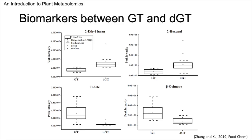Here are the biomarkers we found that can distinguish between GT (green tea) and DGT (decaffeinated green tea). 2-ethylfuran and 2-hexanol levels are higher in DGT than in GT, whereas indole and osamine levels are higher in GT than in DGT. Interestingly, osamine contributes to the basal flavor while indole is a key flavor component in tea. It is notable that regardless of the decaffeination method used, these components are commonly decreased, and ethylfuran and hexanol are commonly increased by the decaffeination process. These compounds may be related to oxidation occurring during decaffeination, as after solvent extraction the tea materials need to be dried again, during which they are exposed to more oxygen.